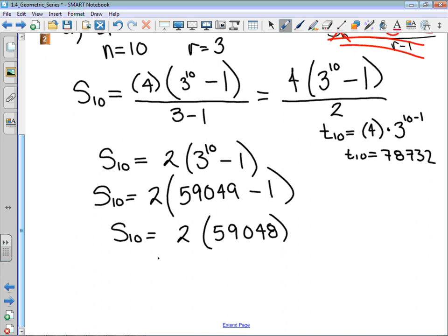What I get is that the sum of these 10 terms is 118,096, which is a very large number for a series that starts at 4. But that 10th term was 78,732.